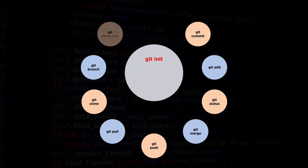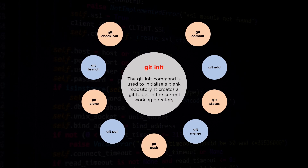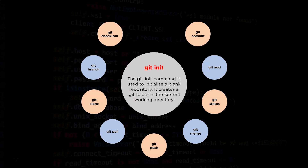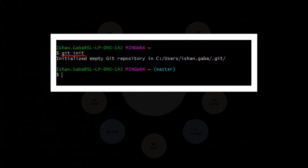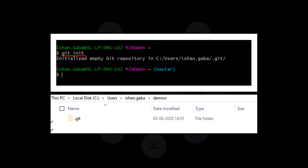The first command that we will see is the git init command. The git init command is used to initialize a blank repository. When executed, the command creates a .git folder in the current working directory. The .git folder created will be a hidden folder and can only be seen by enabling the settings or viewing the hidden files.